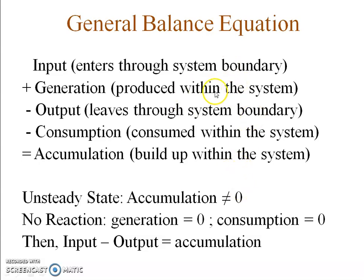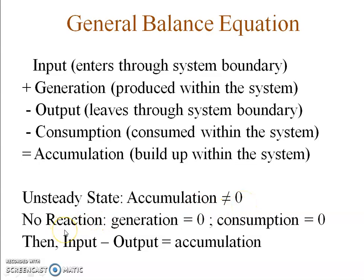This is a differential balance equation because all the terms take the form of flow rates, that is mass per unit time. The accumulation term is the buildup within the system and takes the form of rate of change of mass, or dm/dt, where m represents the mass within the system. Since this is an unsteady state, accumulation is not equal to zero. We are dealing with processes in which no reaction is taking place, so generation and consumption terms are zero. The general balance equation then reduces to: input minus output equals accumulation.